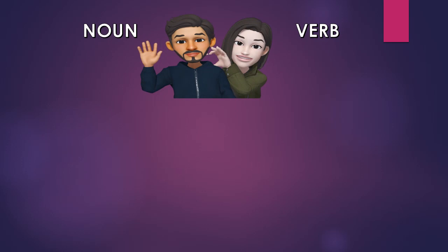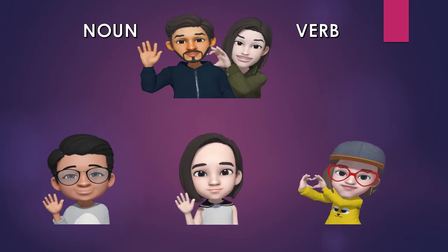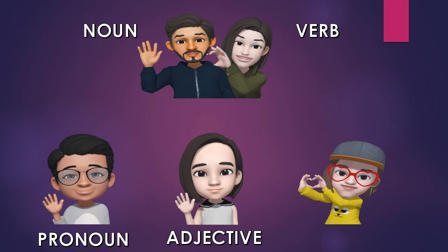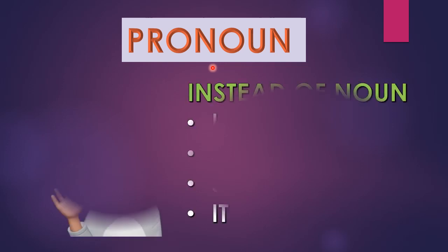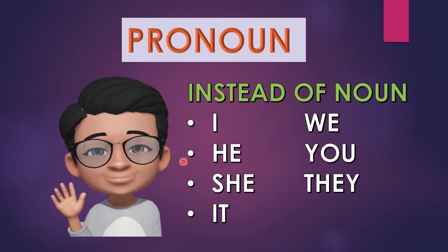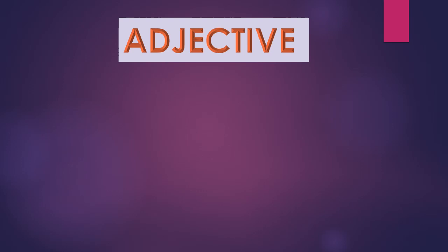This couple, Noun and Verb, has three children — a son and two daughters. The name of the son is Pronoun. Pronoun is always very careful: whenever his father leaves the family for some work, he takes care of the family and does all the work his father was doing. So in a sentence, when the noun is not there, pronoun is used instead of a noun.